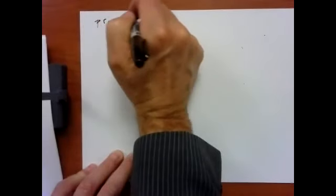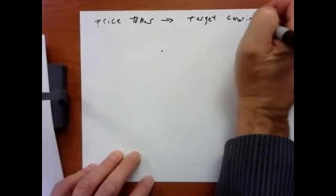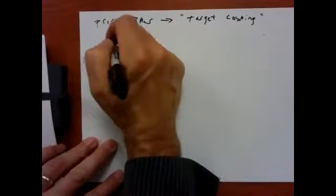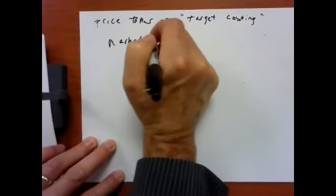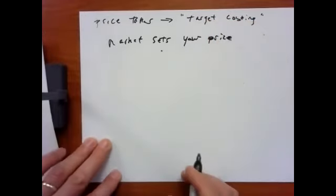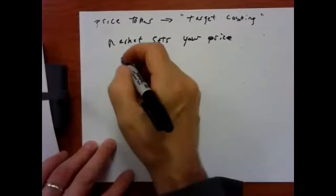Full cost pricing is mostly when you are a price setter. If you can't set prices — if you are a price taker — you are going to engage in target costing, which implies that the market sets your price. You have to decide: can I provide that service at the market price?